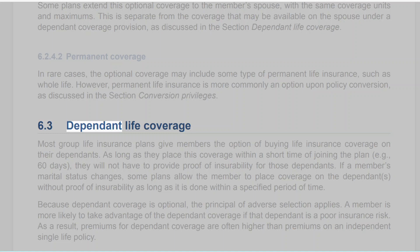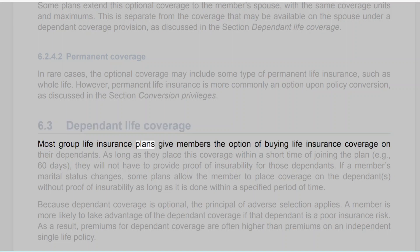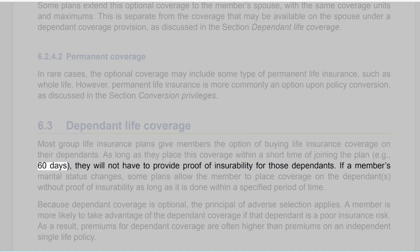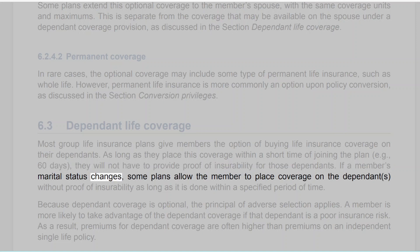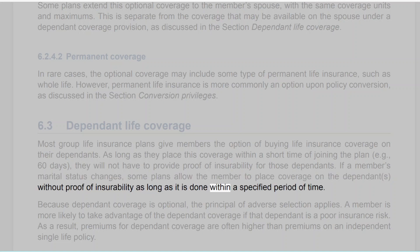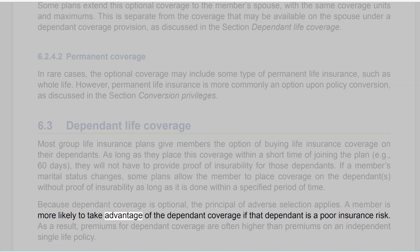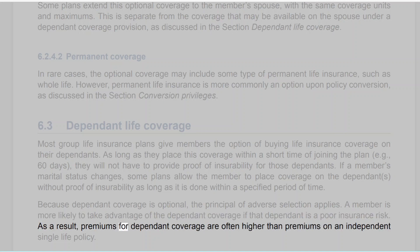6.3 Dependent Life Coverage. Most group life insurance plans give members the option of buying life insurance coverage on their dependents. As long as they place this coverage within a short time of joining the plan — for example, 60 days — they will not have to provide proof of insurability for those dependents. If a member's marital status changes, some plans allow coverage on dependents without proof of insurability within a specified period of time. Because dependent coverage is optional, the principle of adverse selection applies — a member is more likely to take advantage of dependent coverage if that dependent is a poor insurance risk. As a result, premiums for dependent coverage are often higher than premiums on an independent single life policy.